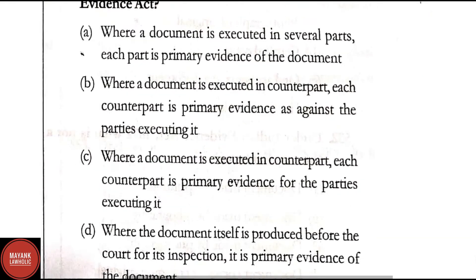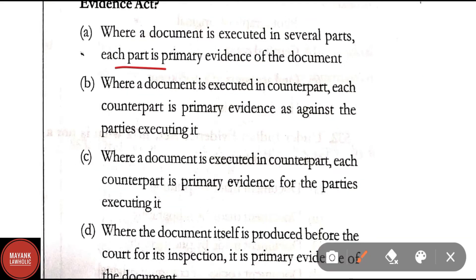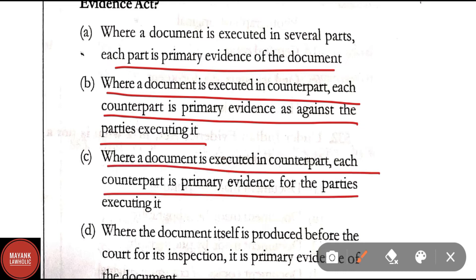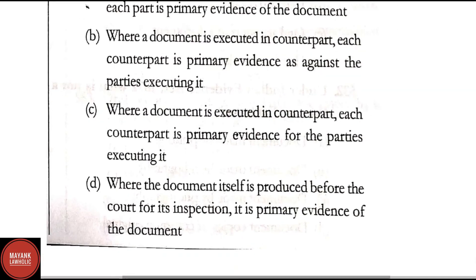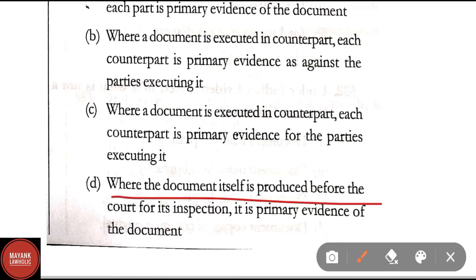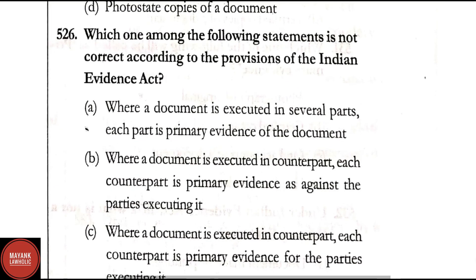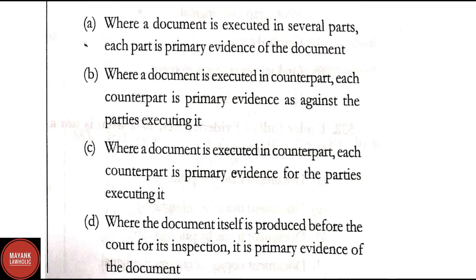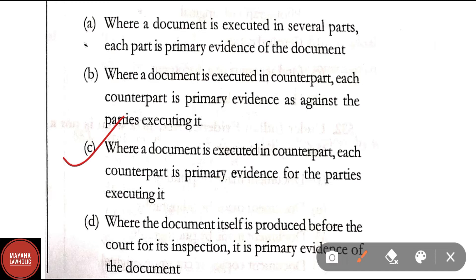Question 526 options: A — where a document is executed in several parts, each part is primary evidence of the document; B — where a document is executed in counterpart, each counterpart is primary evidence against the parties executing it; C — where a document is executed in counterpart, each counterpart is primary evidence for the parties executing it; D — where the document itself is produced before the court for inspection, it is primary evidence. Correct answer is Option C — it is not correct.